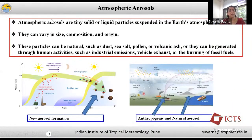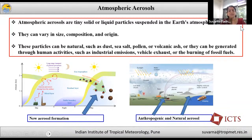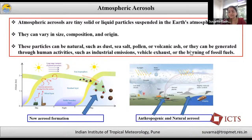Other than El Niño, aerosols also affect the Indian summer monsoon. Briefly, aerosols are tiny solid or liquid particles suspended in the Earth's atmosphere, varying in size, shape, composition, and origin. Aerosols can be natural, such as dust, sea salt, pollen, and volcanic ash, or generated from anthropogenic activity such as industrial emissions, vehicular exhaust, and biomass burning.